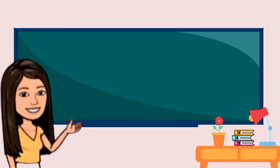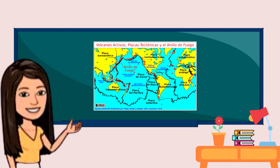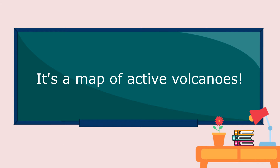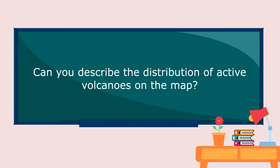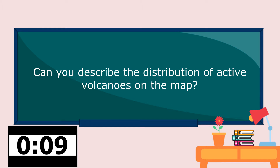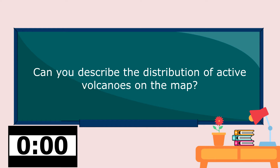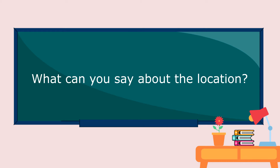Now, let me show you another picture. This time, it's a picture of the map of the active volcanoes. Can you describe the distribution of active volcanoes on the map? What can you say about the location?